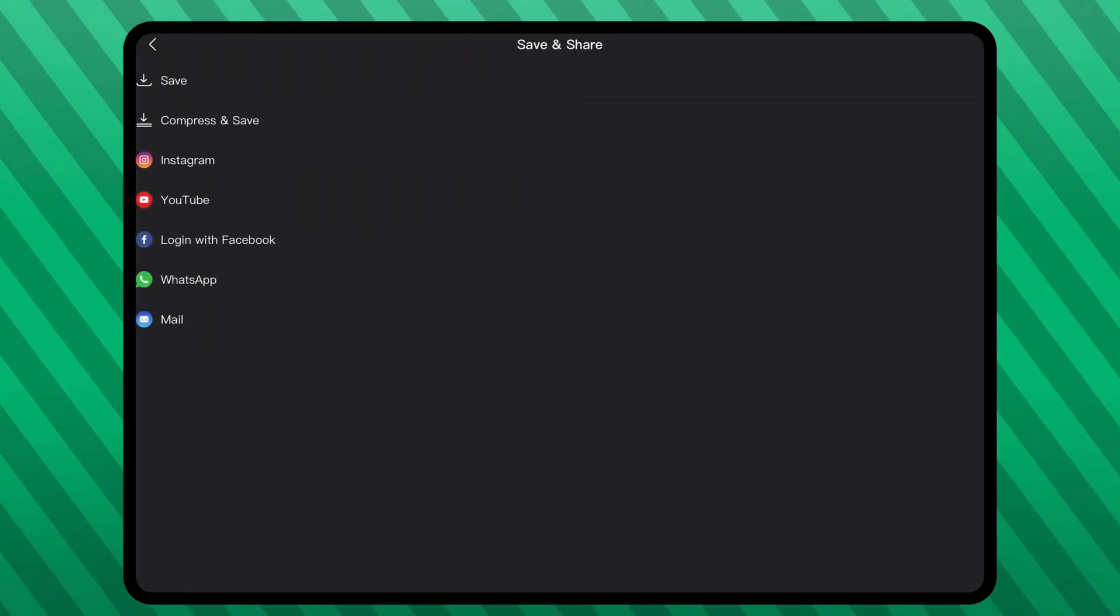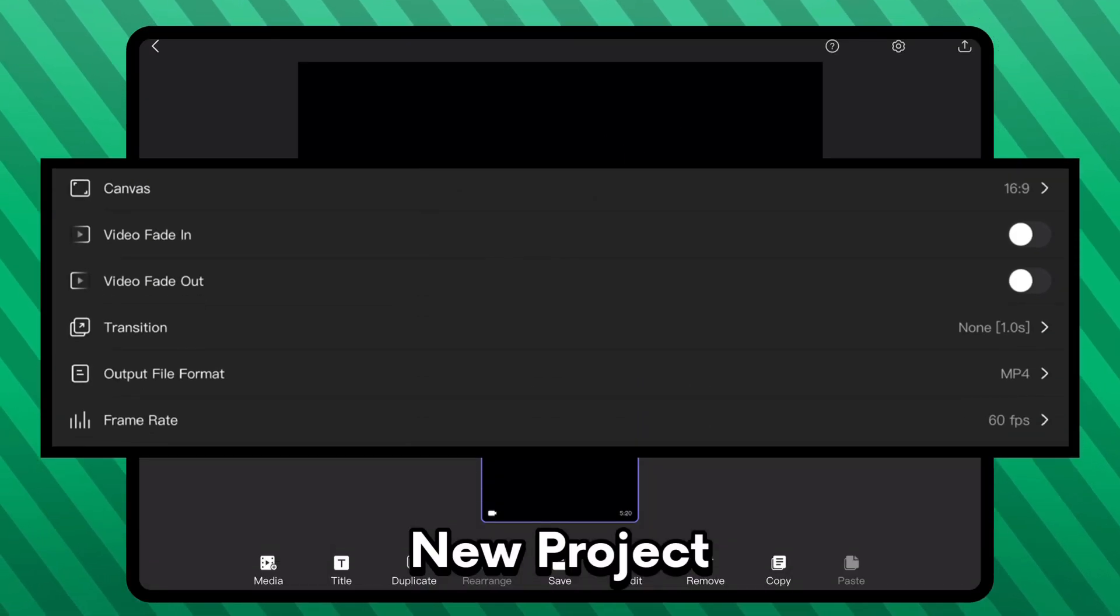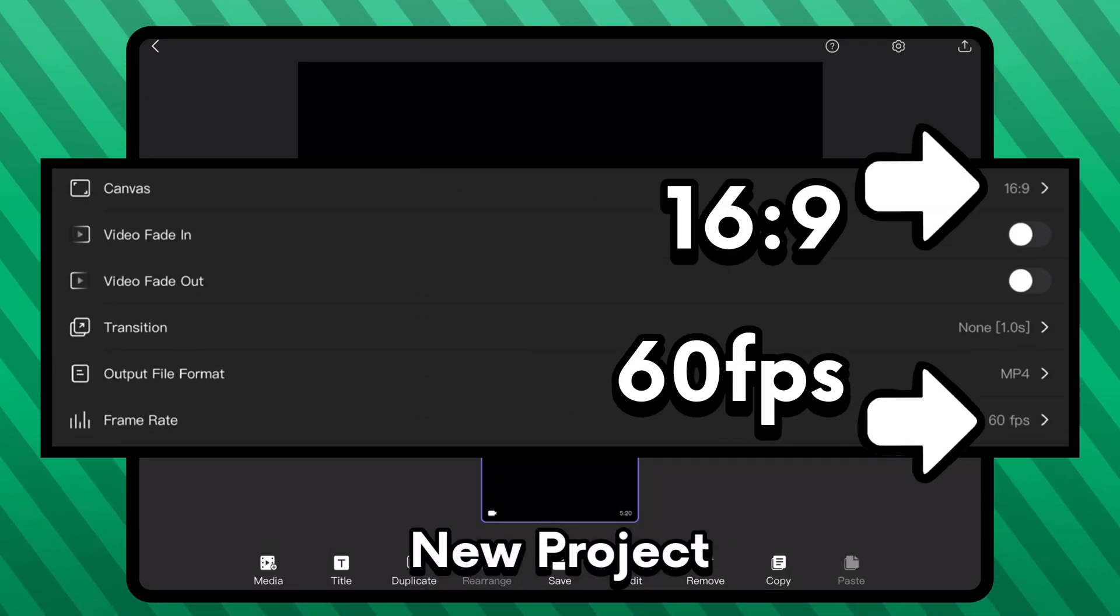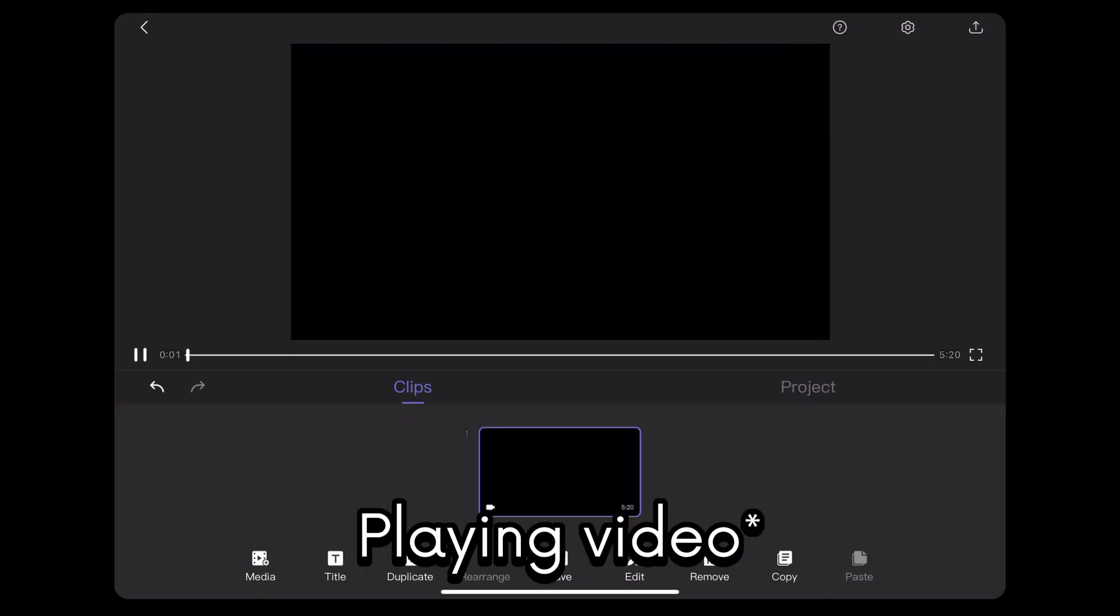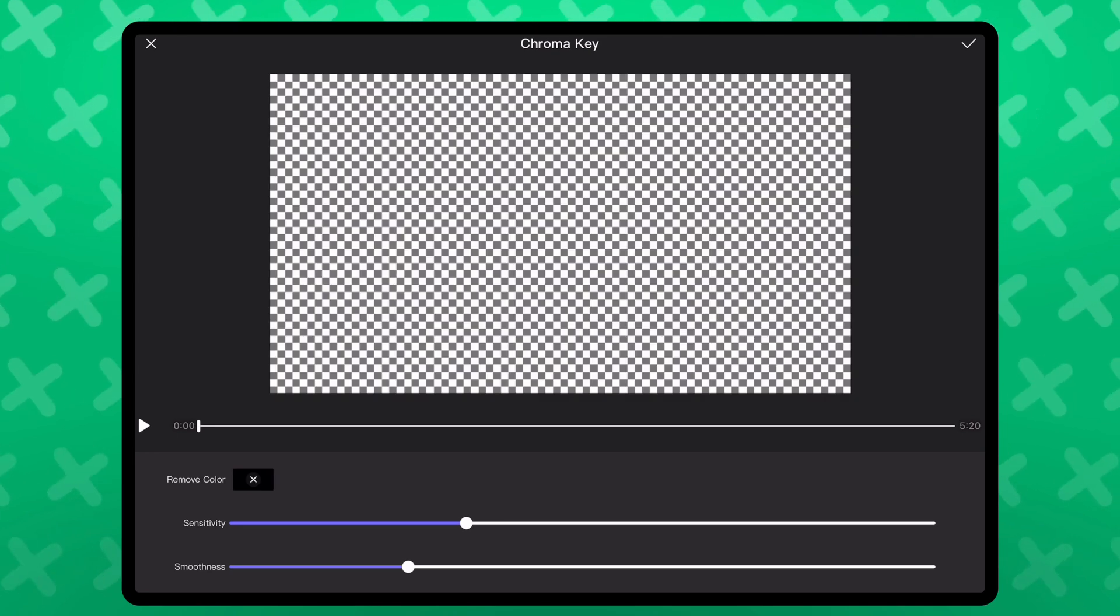Now that I have that, I export the video and then place the video in a new project with the same 16 to 9 aspect ratio and 60 frames per second render setting. Cool. Now, I'm going to erase the background of this video so that I can add backgrounds to it later on.